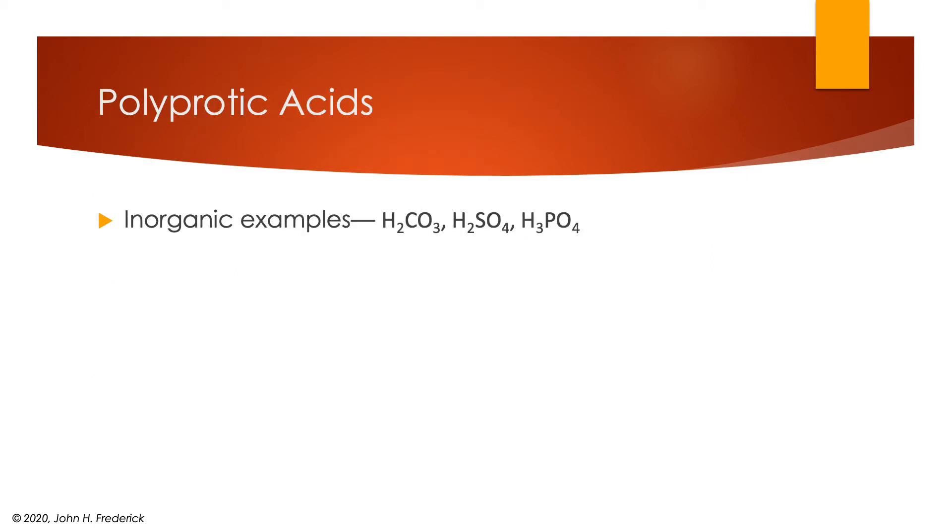All right, I want to talk about polyprotic acids because they represent a particularly interesting case where we have common ions present. Now some of the more common inorganic examples include carbonic acid H₂CO₃, sulfuric acid H₂SO₄, and phosphoric acid H₃PO₄. There are a few other inorganic examples, but there are tons of organic acids that are actually polyprotic acids.